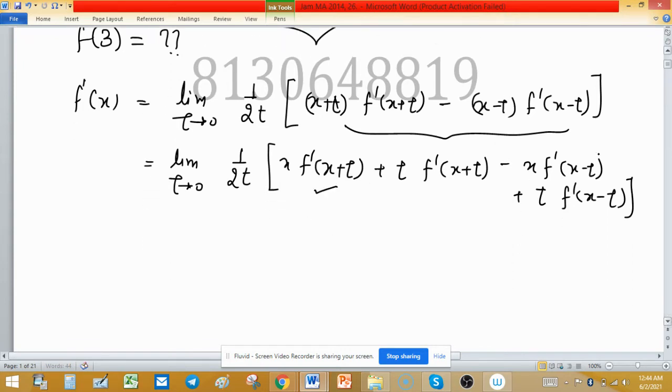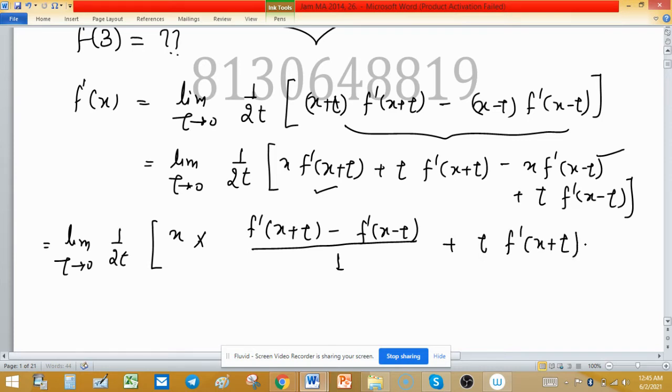So this first term and this third term, taking together, so we can write limit t tends to 0, and 1 upon 2t. And this square bracket, x is in both terms. So you can write once here and multiply. So f'(x+t) minus f'(x-t) here, divided by 1. And next term, how to write? This is t f'(x+t), and plus t f'(x-t). Square bracket closed.